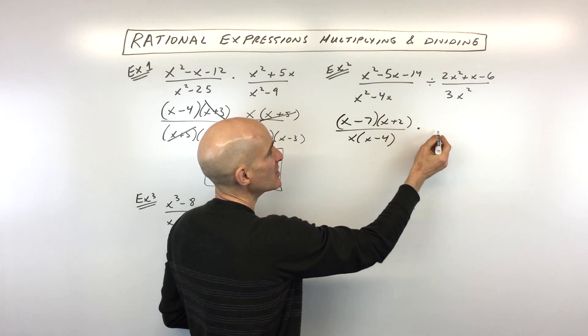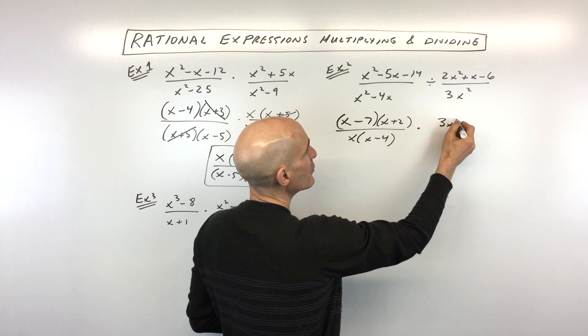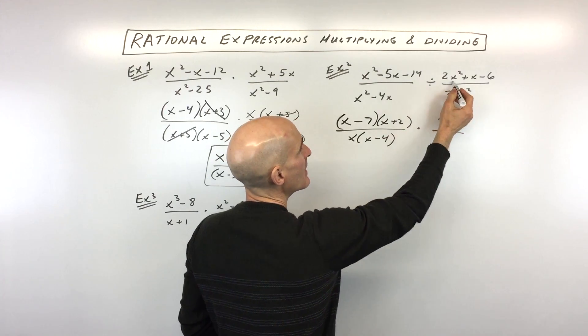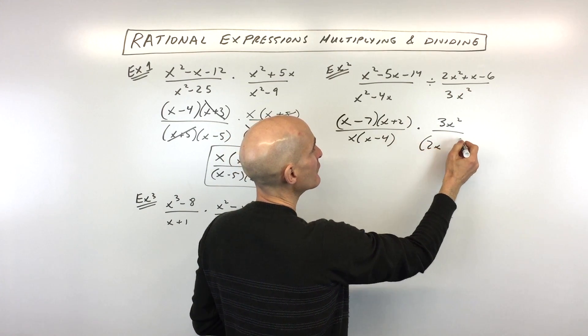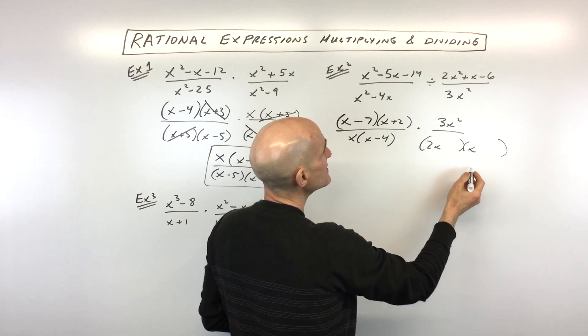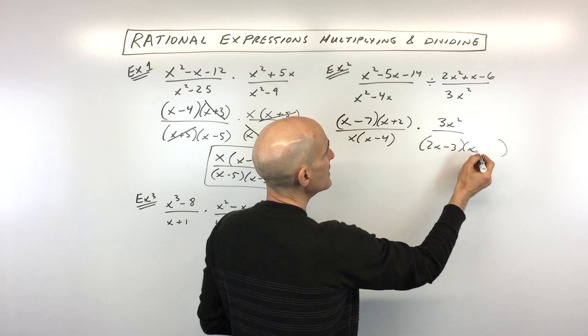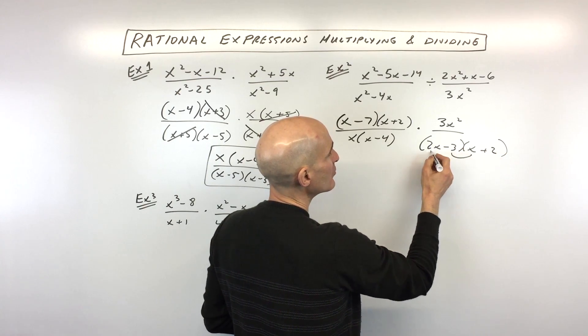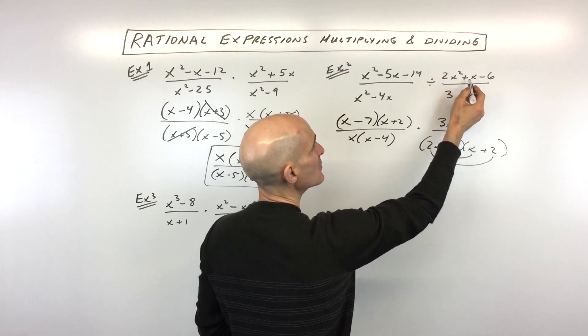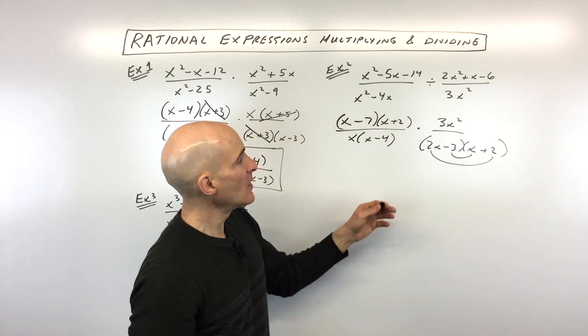I'm going to change this to multiplication. I'm going to put the 3x squared in the numerator now. So I'm flipping this. And I'm going to factor the denominator. So the denominator factors to, let's see, this would be negative 3, positive 2. Because negative 3x and positive 4x adds up to the middle term, which is 1x.